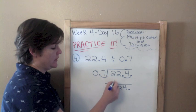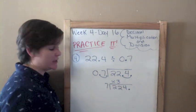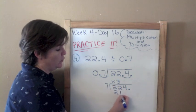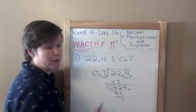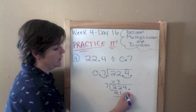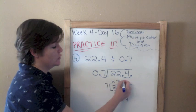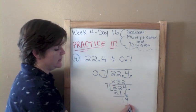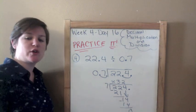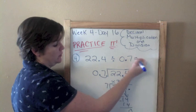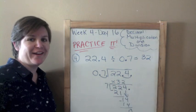7 goes into 2. It can't. How many times does 7 go into 22? About 3 times because 3 times 7 is 21. Now we subtract. 2 minus 1 is 1. 2 minus 2 is 0. We bring down our 4. 7 goes into 14 twice. 2 times 7 is 14. We subtract and we get 0. So, this number right here would equal 32. Easy peasy. Let's get to our B message.